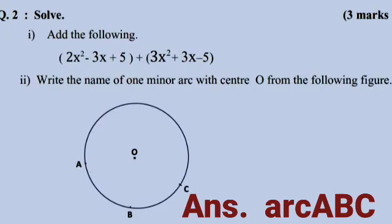Second question: write the name of one minor arc with center O from the following figure. Very easy answer — the answer is arc ABC.